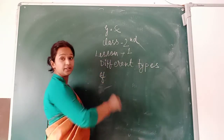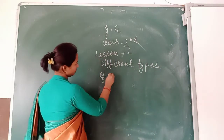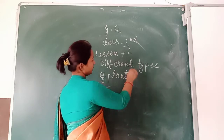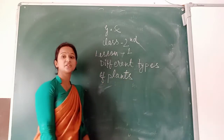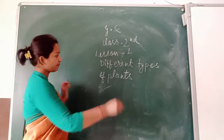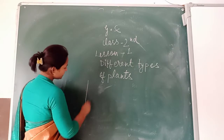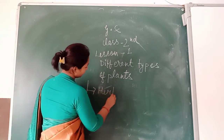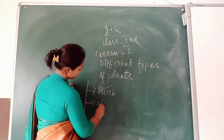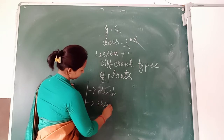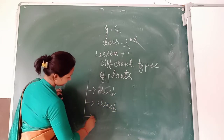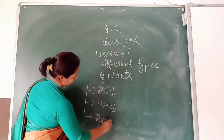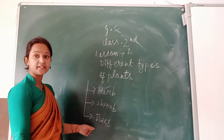Different types of plants. It is divided into the herb, shrub, and trees.